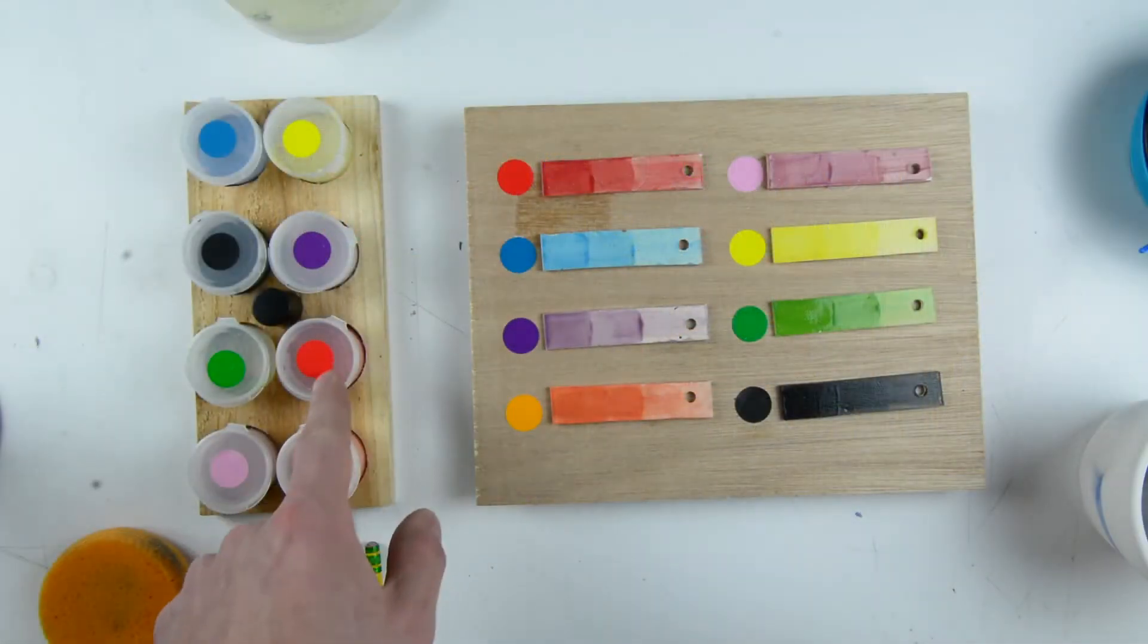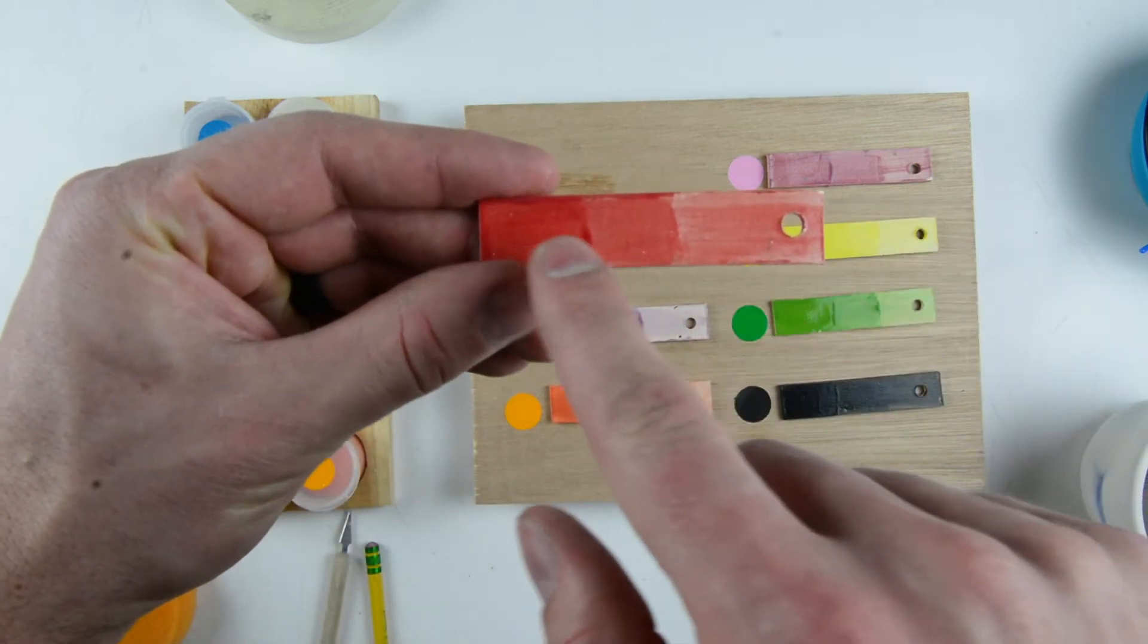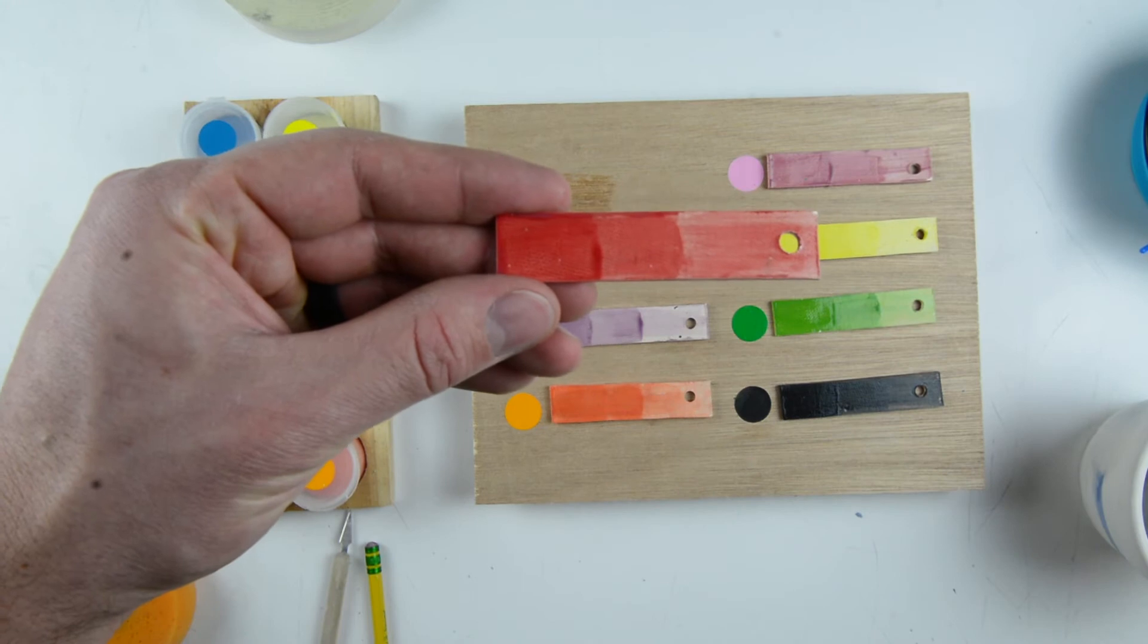The reference color palette shows what each color will look like after being heated. Each sample shows what the colors look like with one, two, and three coats of paint.